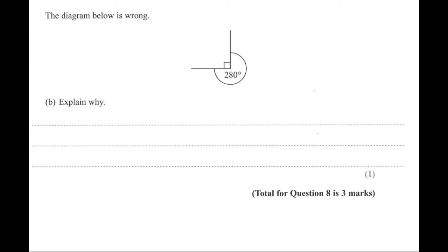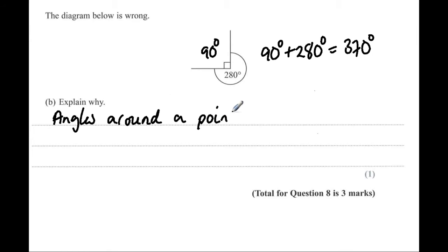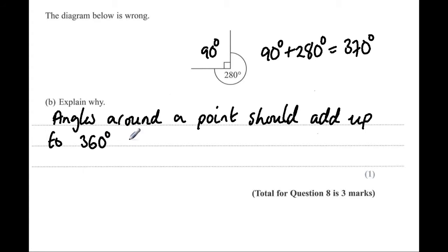Question 8B. The diagram below is wrong — explain why. Angles around a point should add up to 360 degrees. We have 90 degrees and 280 degrees. Adding them together gives 370 degrees, which is wrong. So the diagram is incorrect because angles around a point should add up to 360 degrees, not 370 degrees.